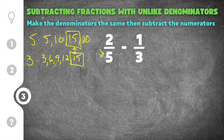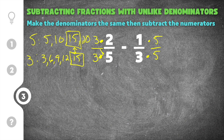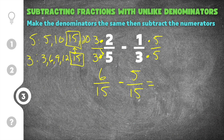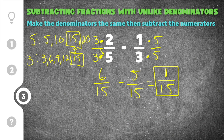I need to change this 5 into a 15, so I multiply by 3 over 3, doing the same to the numerator to keep them proportional. For 1 third, I need to change the 3 into a 15, so I multiply by 5 over 5. For 2 fifths: numerator 3 times 2 is 6, denominator 3 times 5 is 15. For 1 third: numerator 1 times 5 is 5, denominator 3 times 5 is 15. Now that the denominators are equal, we subtract: 6 minus 5 is 1, keeping the denominator of 15. Nothing goes into 1 or 15, so 2 fifths minus 1 third equals 1 fifteenth.